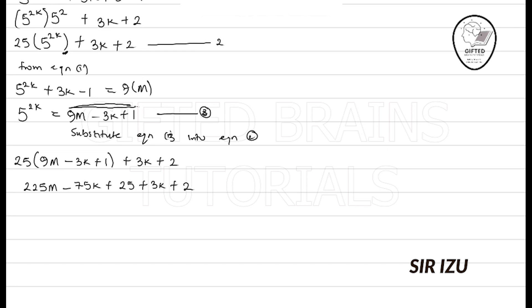So, this will give us, again, 225m, then minus 72k when I collect the like terms, and then plus 27. Now, so, look at this now. How do we confirm that this is a multiple of 9 when 9 can be factorized out of it? If 9 is factorized out, 9 is factorized out.